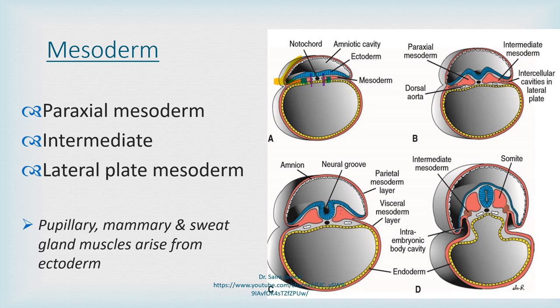The lateral plate mesoderm further divides into the parietal mesoderm and the visceral mesoderm.